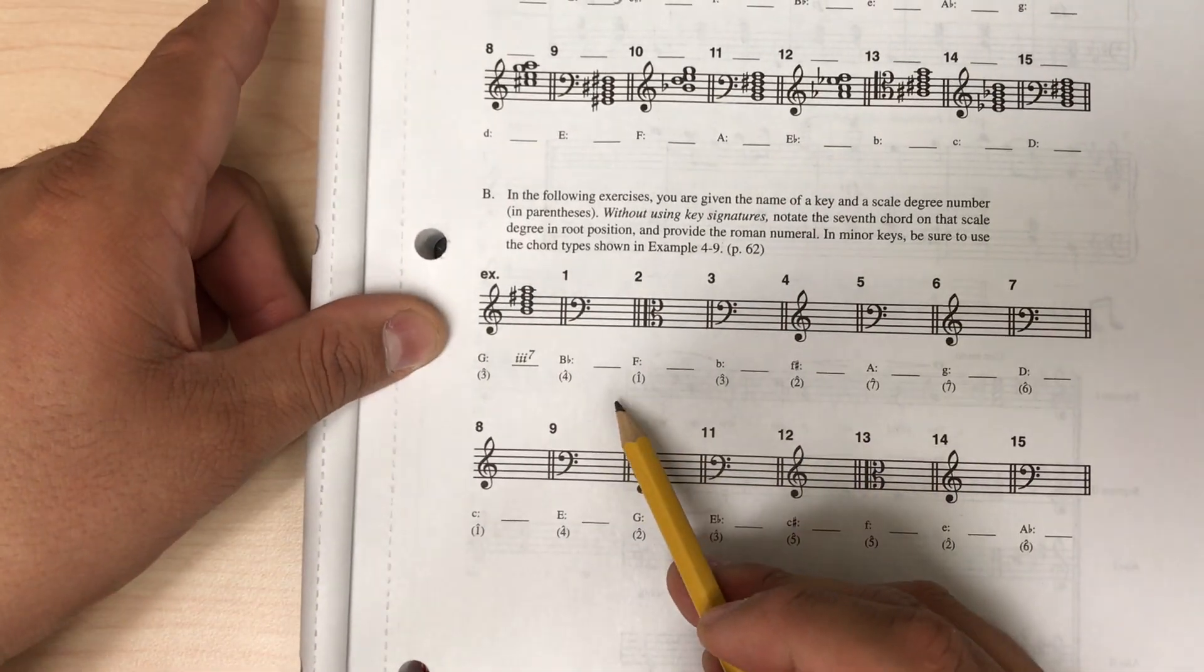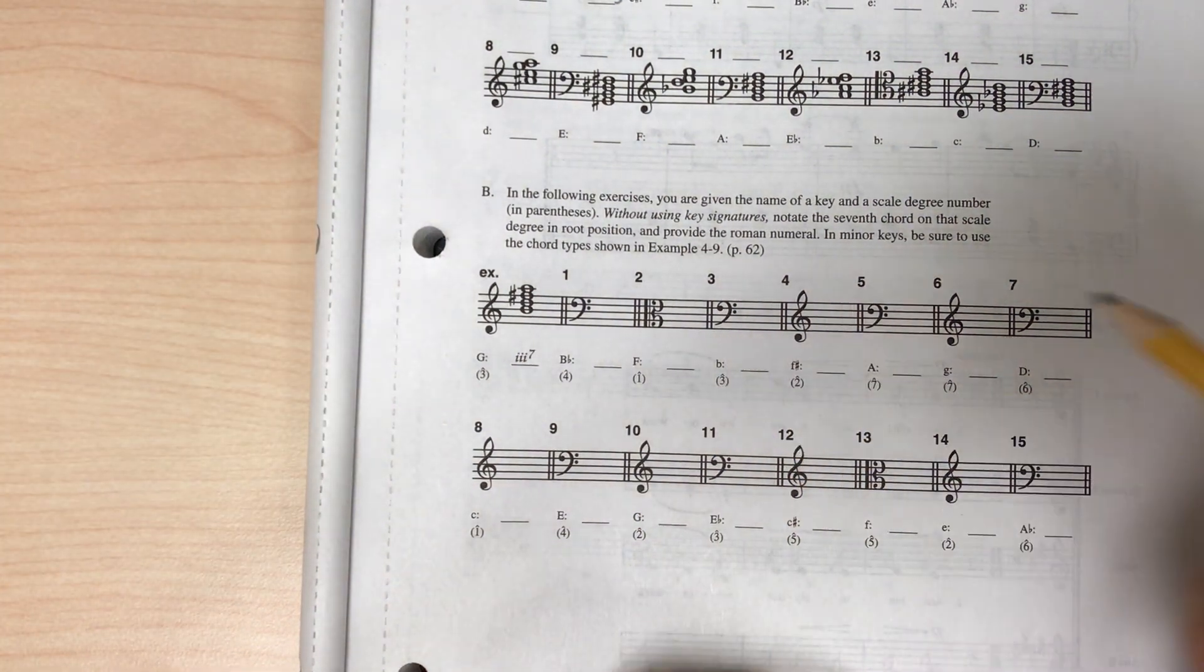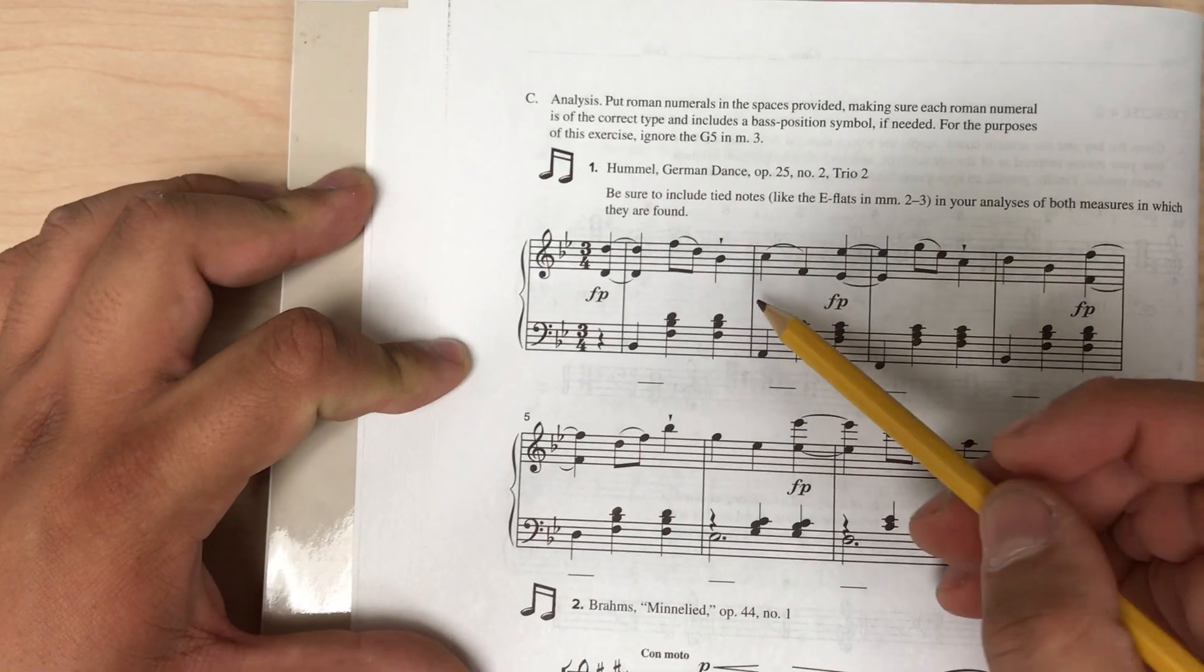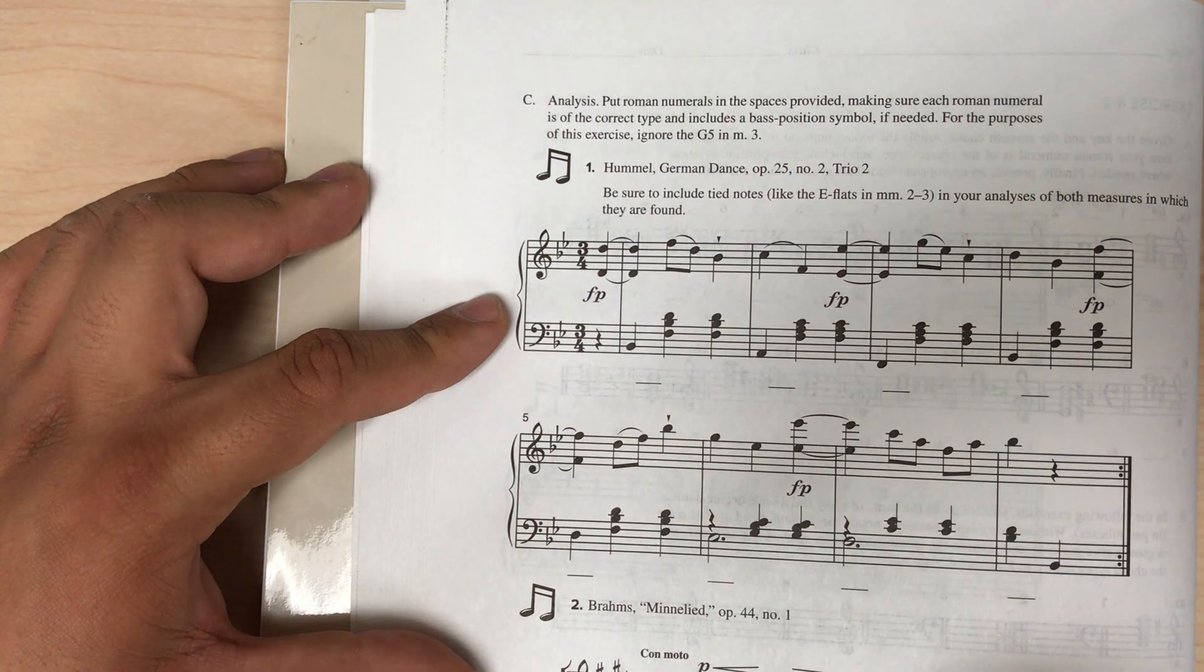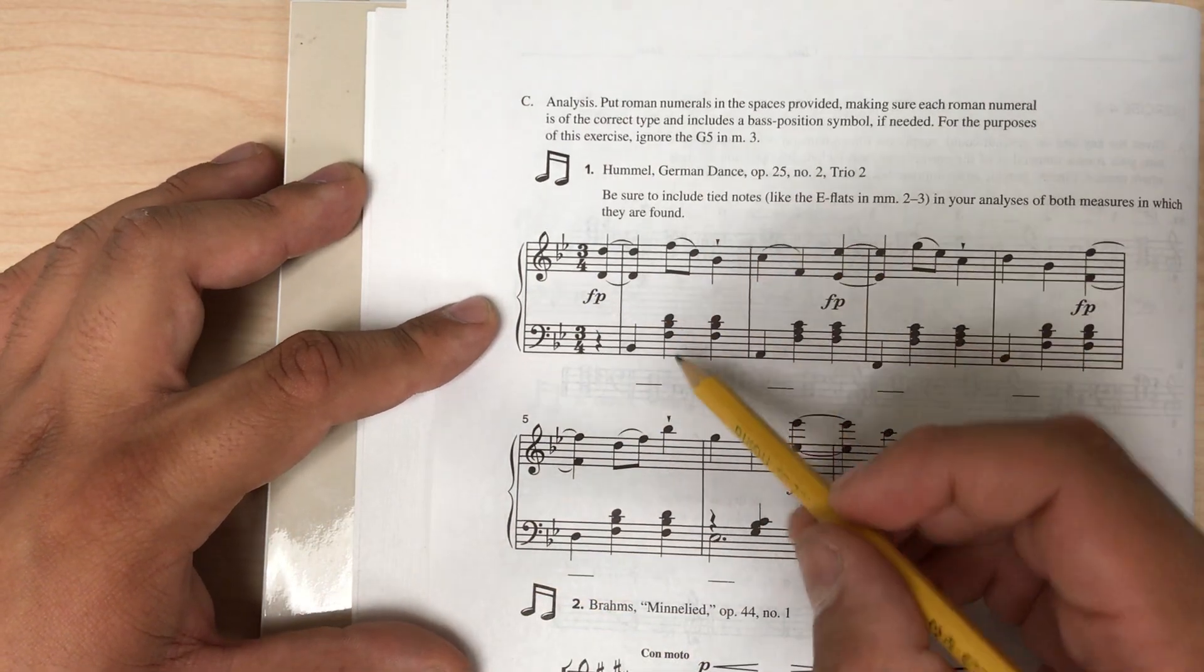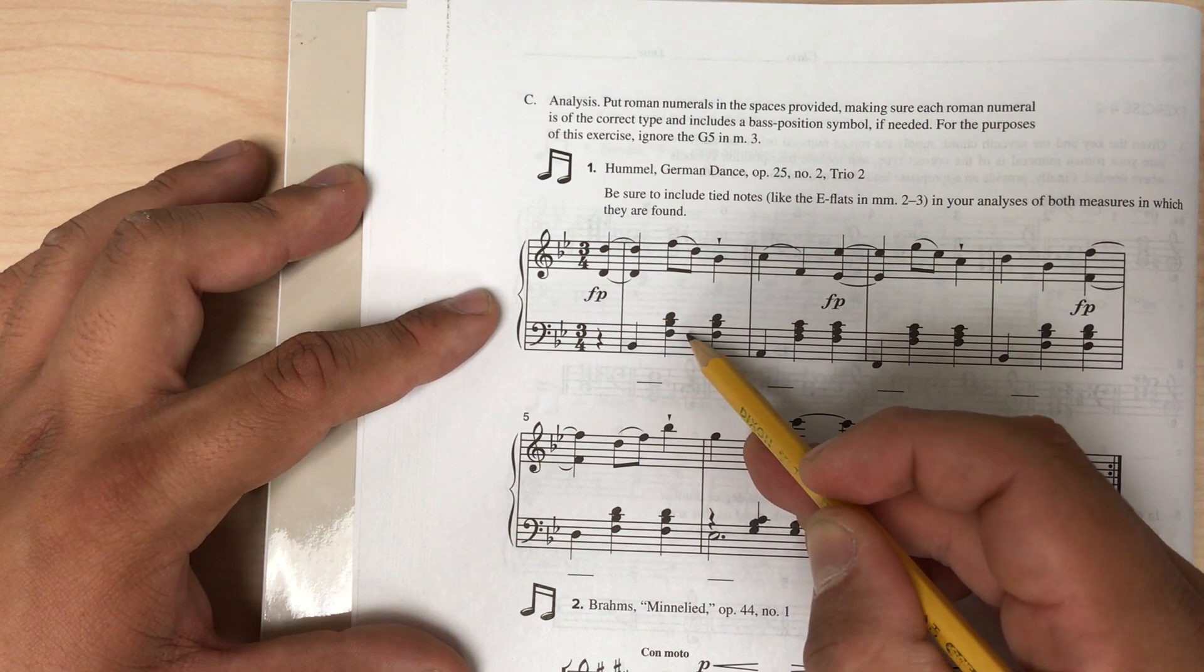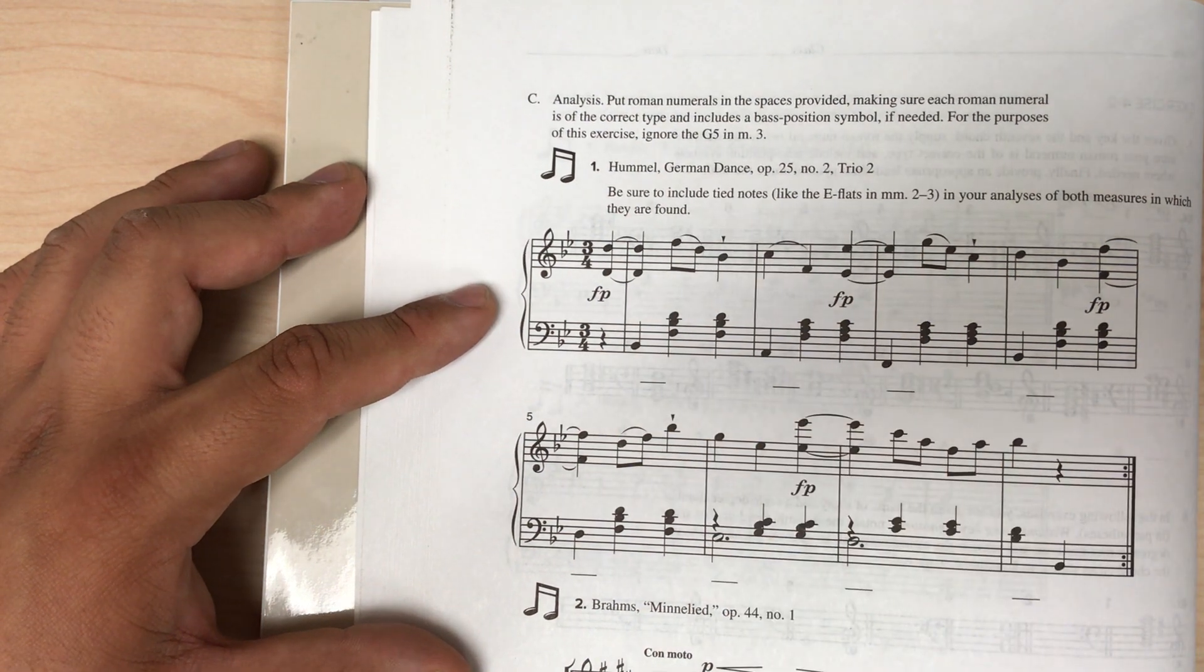So same exact process as 4-1 part A. Part B, same thing. Same exact process as 4-1 part B. So if you're stuck here, go look at the video that I made for 4-1 part B, and for part C, same thing as 4-1 part C. Here the pieces look a little bit more complicated, but you're doing the same basic process. So if you're stuck, go back, look at my video for 4-1 part C, and it'll be the same process. Stack these in thirds to figure out what the chord is, then place it in the context of the key to get your Roman numeral.